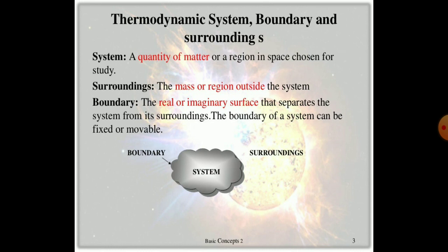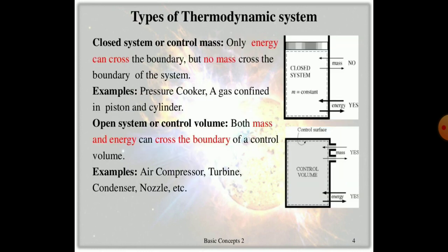The boundary of the system can be fixed or movable. You can see on screen the boundary, system, and surrounding shown in the diagram. The types of thermodynamic systems include the closed system, or control of mass. In a closed system, only energy can cross the boundary — no mass crosses the boundary. Such a system is called a closed system.